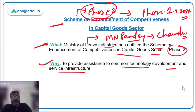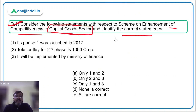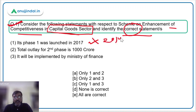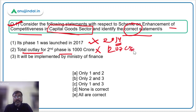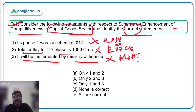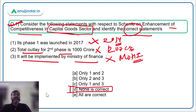Coming back to the question, we have to identify the correct statement. Statement one says Phase 1 was launched in 2017 — that is incorrect, it was 2014. The total outlay for the second phase is not 1,000 crores, it is 1,207 crores — also incorrect. It will be implemented by the Ministry of Finance — incorrect, it is the Ministry of Heavy Industries headed by Mr. Mahindranath Pande. All statements are incorrect, so option D is the correct answer.